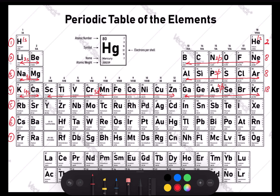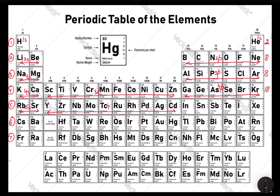In case of period number five, there will be filling of 5s, then 4d, then 5p. For rubidium and strontium, the filling of 5s will take place. Then from yttrium to cadmium, the filling of 4d will take place. And then from indium to xenon, the filling of 5p will take place, taking total elements to again 18 in period number five.